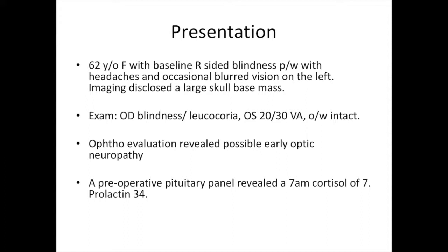The case refers to a 62-year-old female with baseline right-sided blindness after surgery when she was a child, who now presented with headaches and occasional blurred vision on the left. Imaging disclosed a large skull-based mass. On physical examination, she was blind on the right with leukocoria, and she had slightly decreased visual acuity on the left.